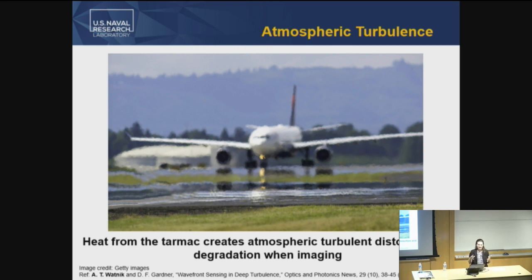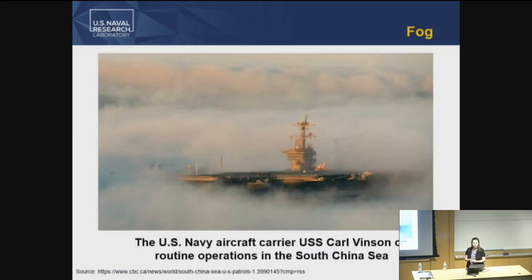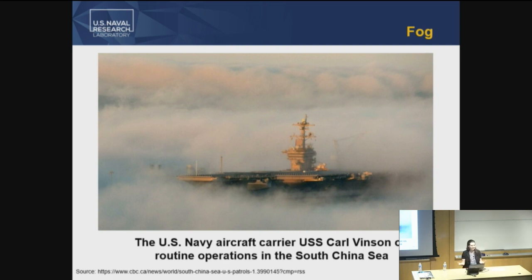Some of the things we want to correct for might be natural, and some might be man-made. Another challenging situation is obscuration — let's say an adversary puts out camouflage and they're obviously trying to hide something underneath. We need to be able to image what's under that. Going back to natural phenomena: fog. Here is a U.S. Navy aircraft carrier in the South China Sea. The problem with fog is it makes it so we can't see our adversary, and they can't see us — it kind of has dual roles.